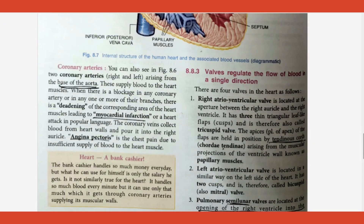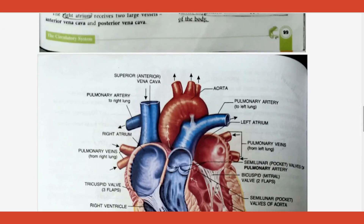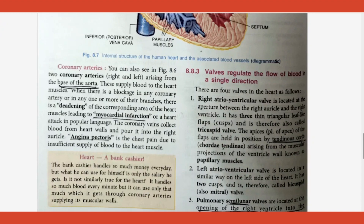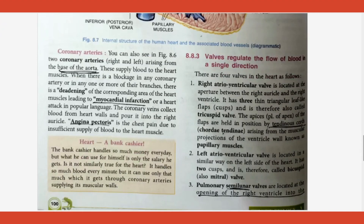What are coronary arteries? A branch of the aorta goes and gives blood to the muscles of the heart — those are called coronary arteries. Their exact location: arising from the base of the aorta. Because of blockage in coronary arteries, there are certain complications.